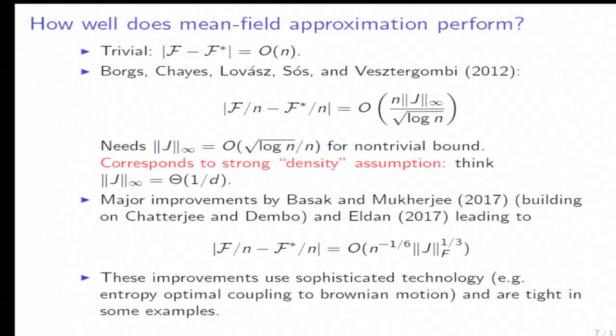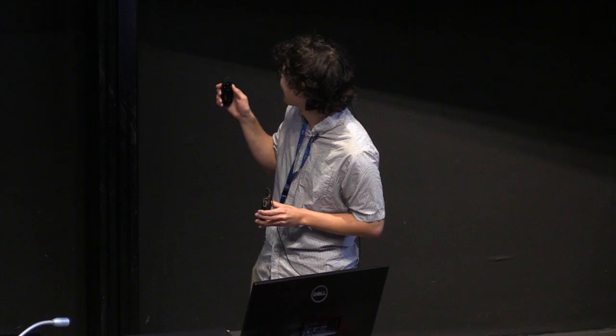So this has been a big topic of interest recently, is how well does this mean field approximation work? So this is actually very classical. And for Curie-Weiss, it's known for a long time that this is very accurate. But in general, I think things really started with this big graph limits paper by Borgs, Chayes, Lovász, Sós, and Vesztergombi. And they showed this bound.